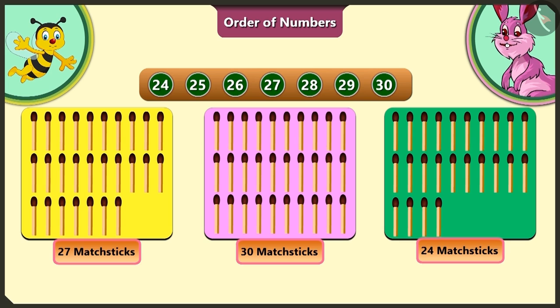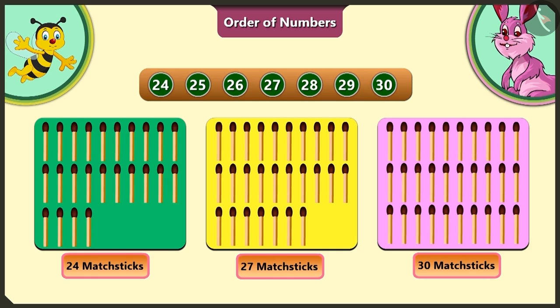Here the green card has the least matchsticks and the pink card has the maximum number of matchsticks. So if we have to arrange them in order from small to big, we will place the green card ahead of all, then the yellow card and the pink card in the end.